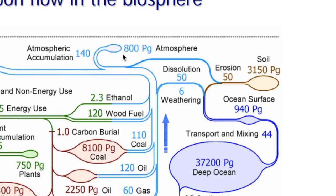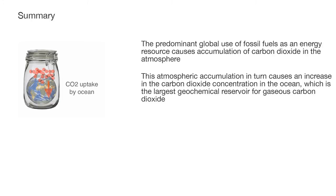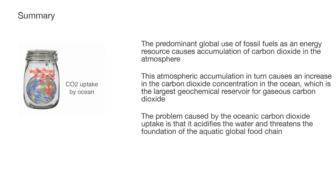The predominant global use of fossil fuels as an energy resource causes accumulation of carbon dioxide in the atmosphere. This atmospheric accumulation in turn causes an increase in the carbon dioxide concentration in the ocean, which is the largest geochemical reservoir for gaseous carbon dioxide. The problem caused by the oceanic carbon dioxide uptake is that it acidifies the water and threatens the foundation of the aquatic global food chain.